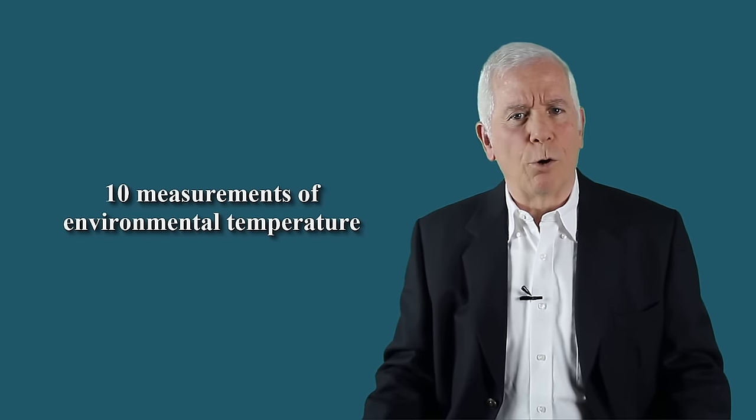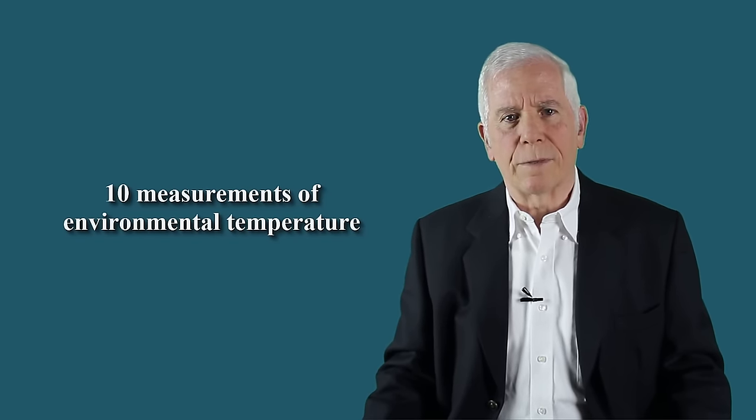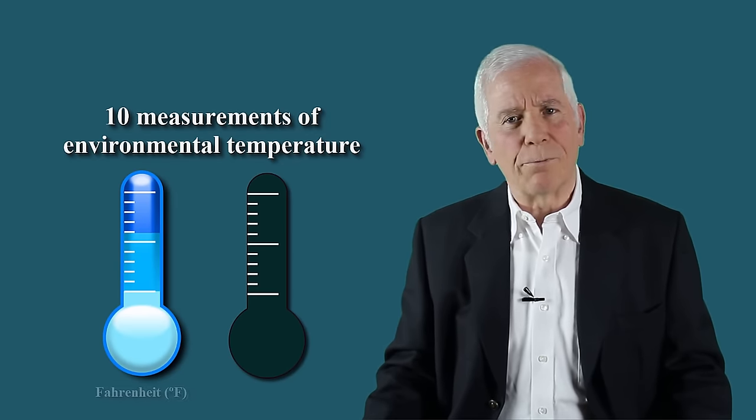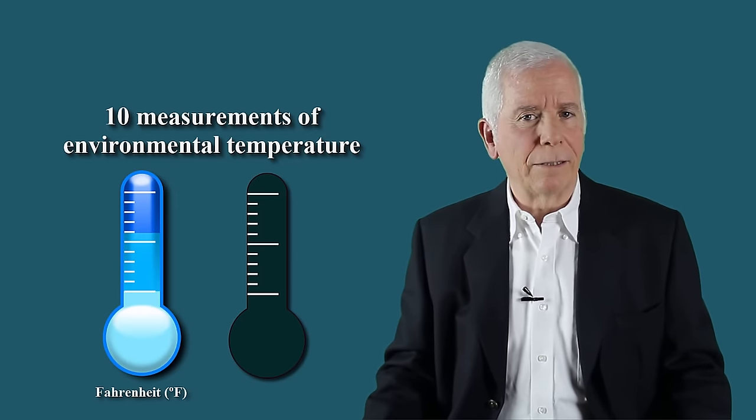Let us try to understand the principle underlying this analysis. The principle is very simple and easy to understand. Suppose that we make ten measurements of environmental temperature on two thermometers, one on a Fahrenheit scale and another on a Celsius scale.